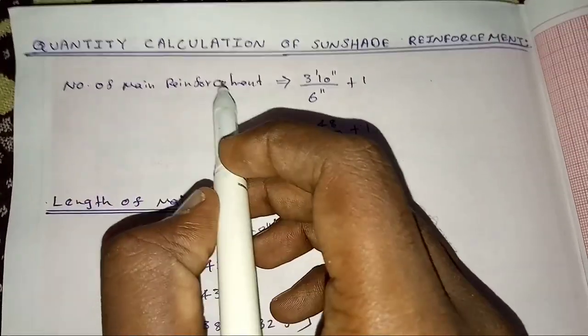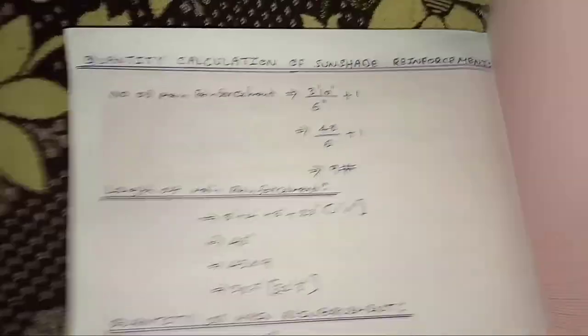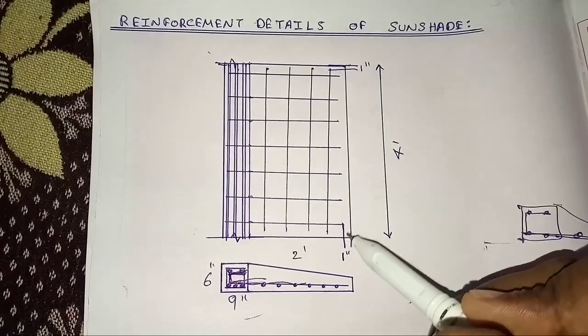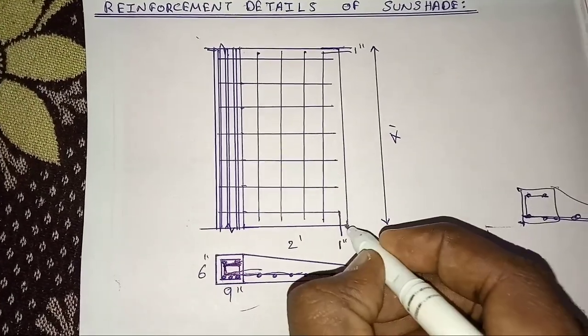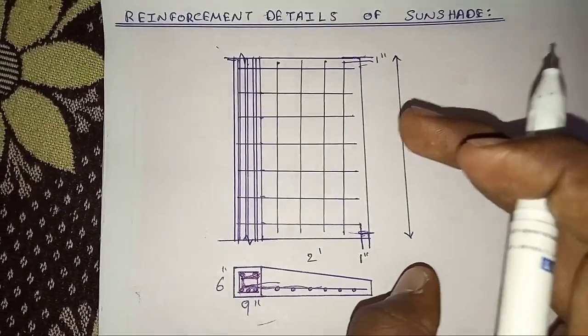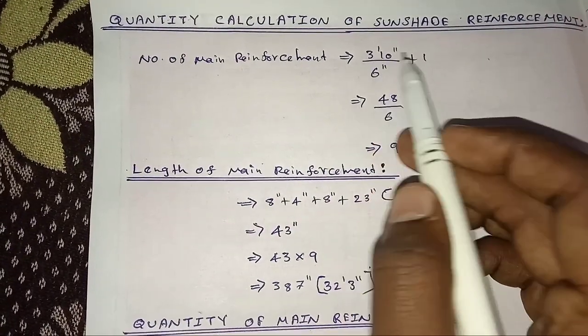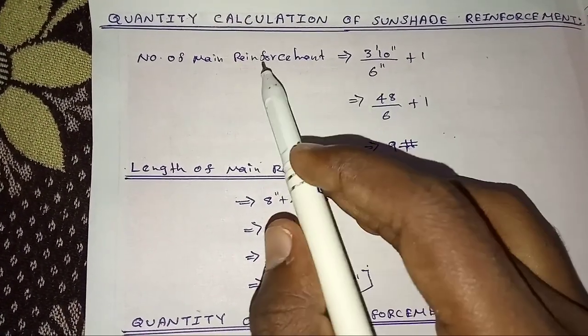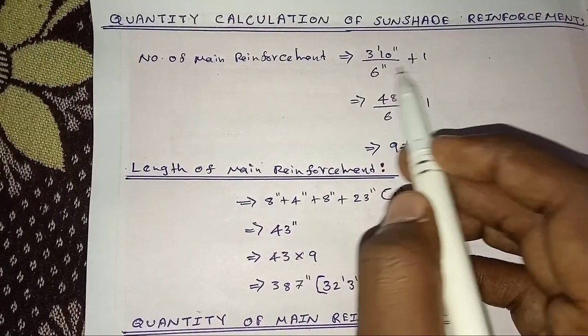First, number of main reinforcement. 3 by 15. How do you do this? 4 by 4, plus 1. 3 by 15, 4 by 15, 5 by 15. This is the formula.